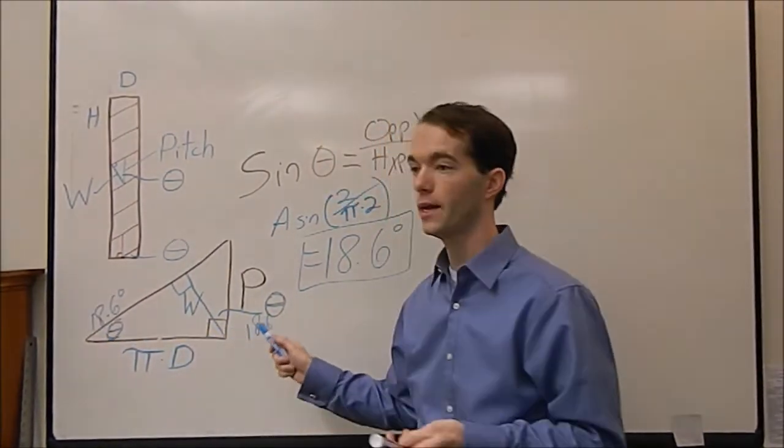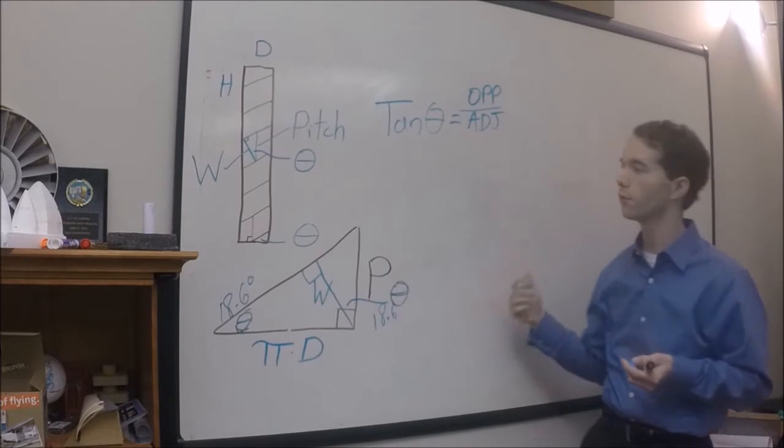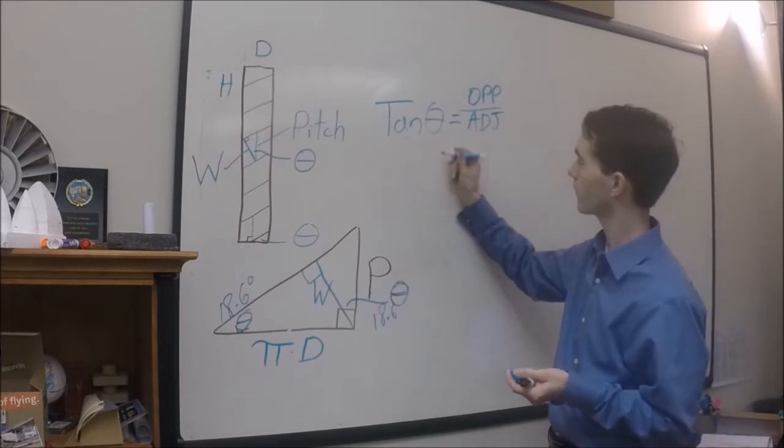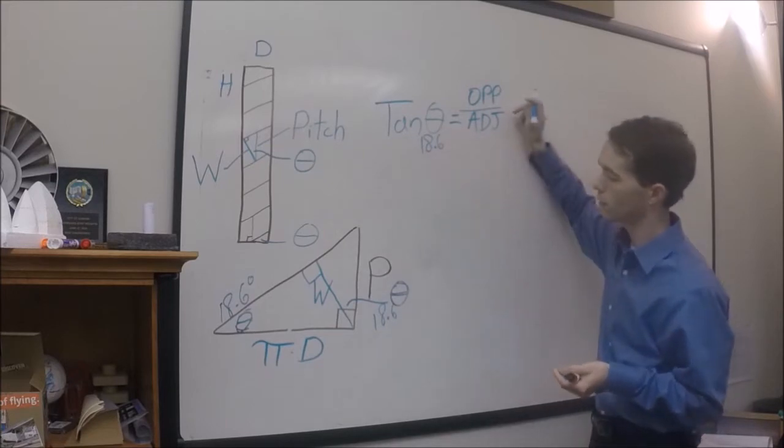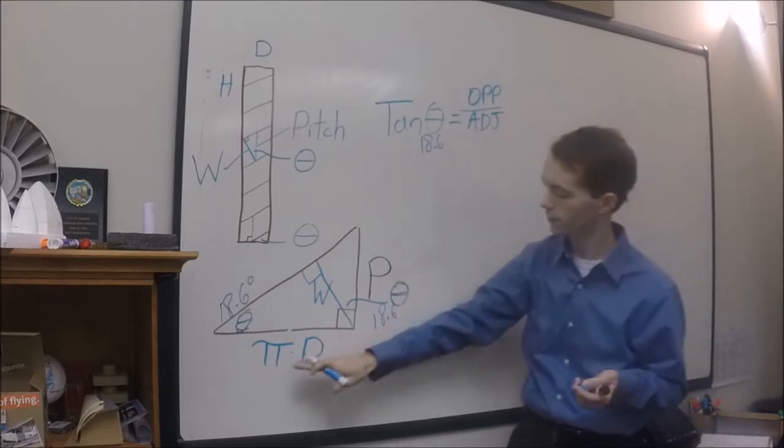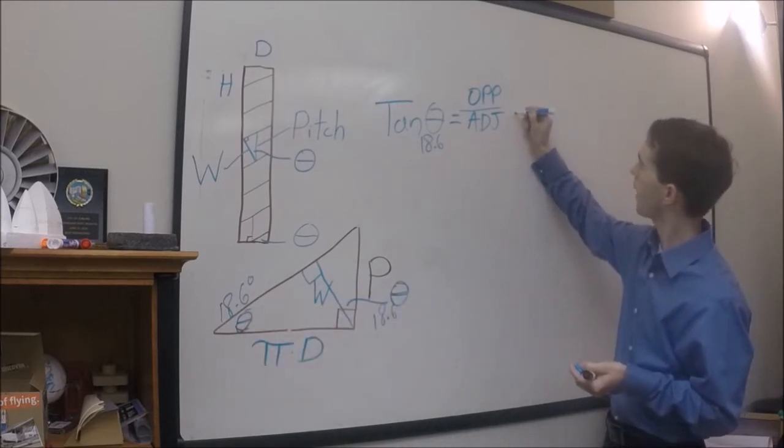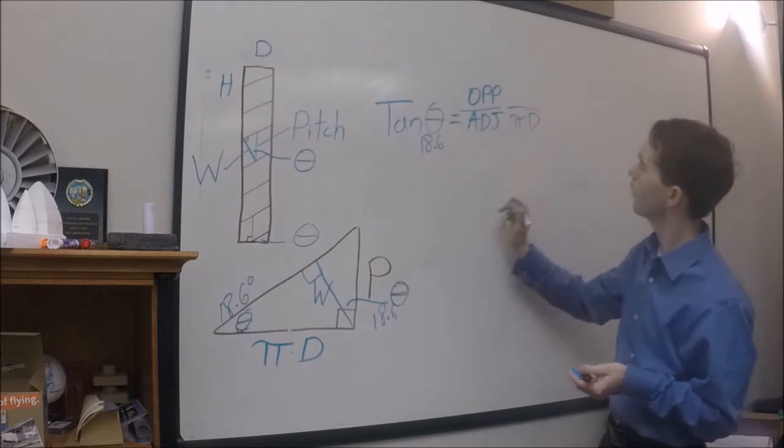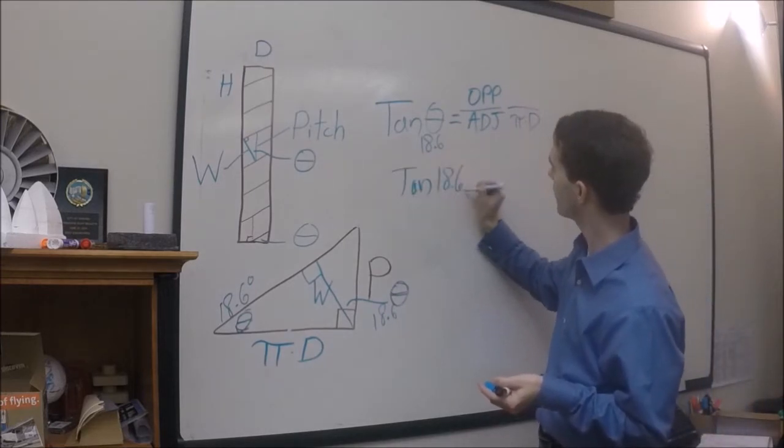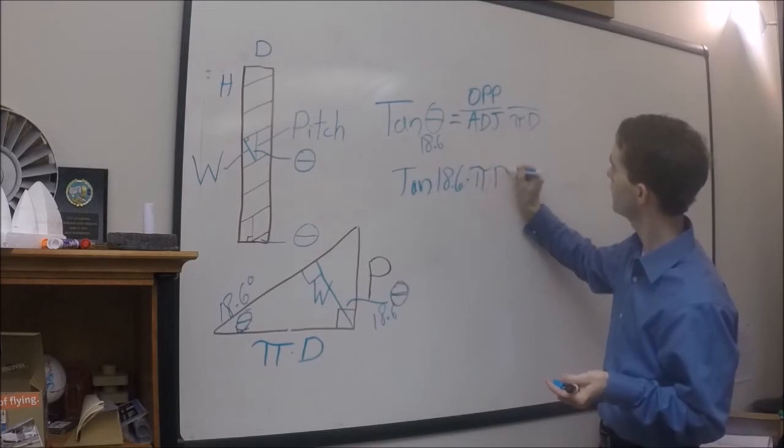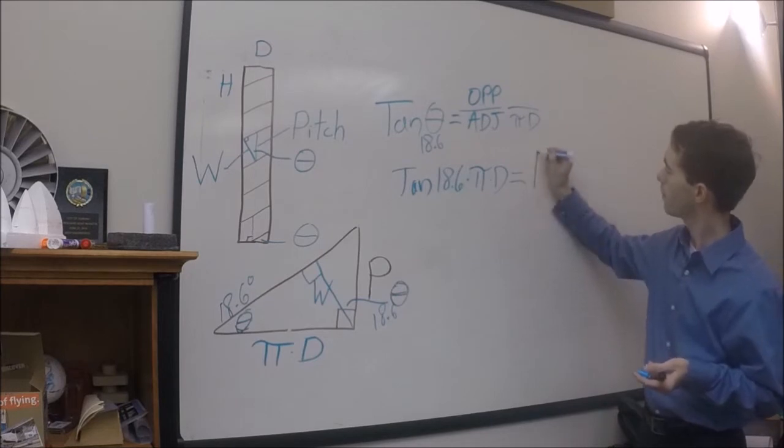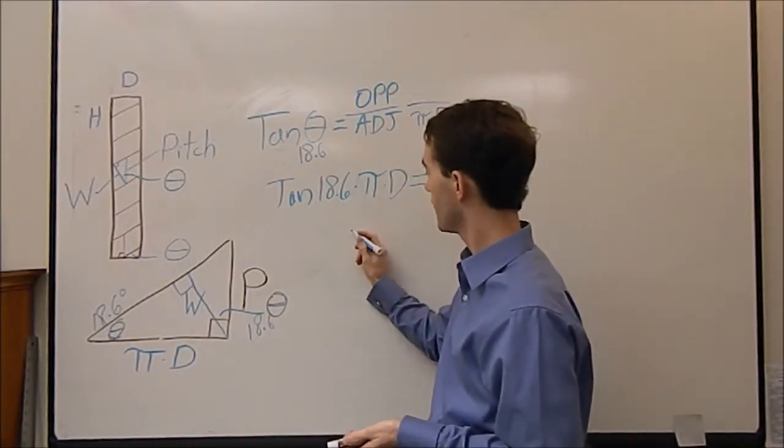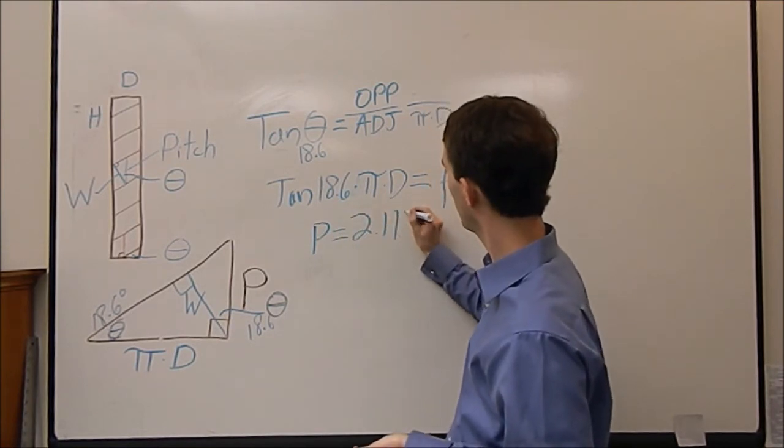Well now we certainly know more than we need to find our pitch. Tangent of theta is opposite over adjacent, or rise over run. Tangent of theta, we know theta is 18.6, so we can just doodle that in there. We know what our adjacent is, because this is the side that is adjacent to our angle, is pi d. So, tangent of 18.6 times pi d is equal to p, or our pitch, which is the opposite side that we're trying to solve for right there. So you run all this through your calculator, I can't do it in my head, and you end up with a pitch of 2.11 inches.